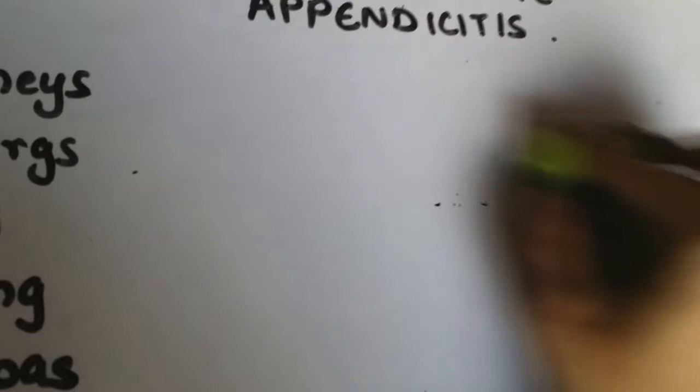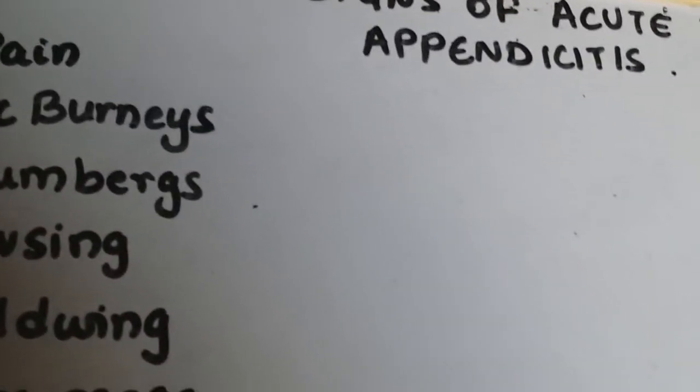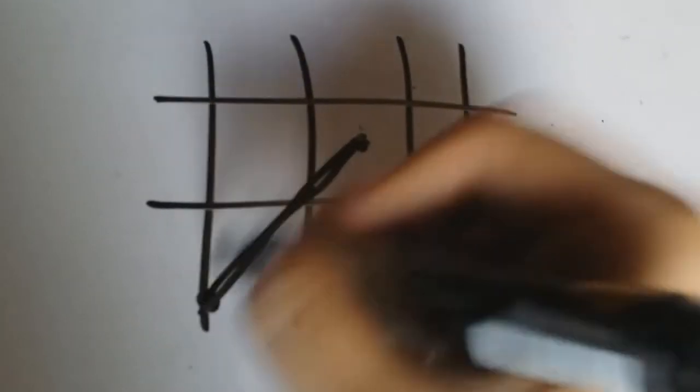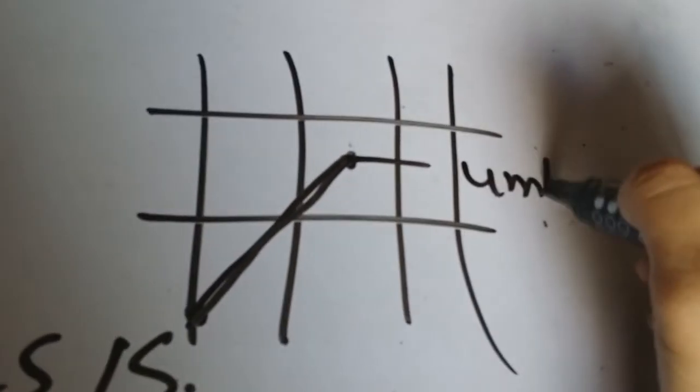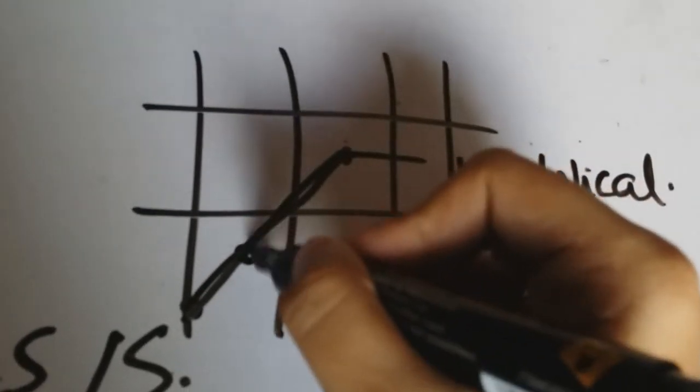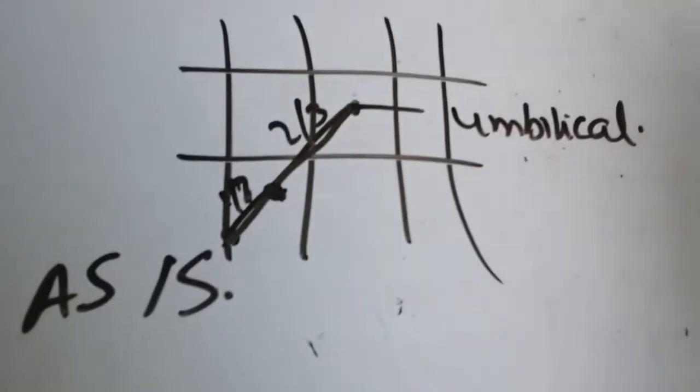The second sign is McBurnie's sign — tenderness at McBurnie's point. McBurnie's point is located between the anterior superior iliac spine and the umbilicus, specifically at two-thirds of the way along that line from the umbilicus. Tenderness at this point is known as McBurnie's sign. I don't have a mnemonic for this one because we've been learning about it since forever.